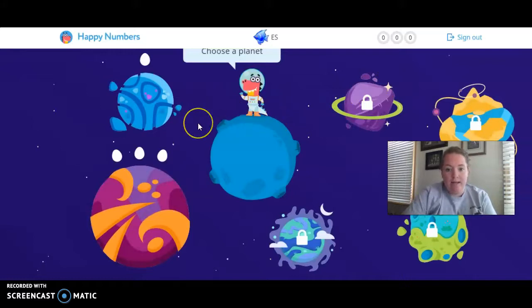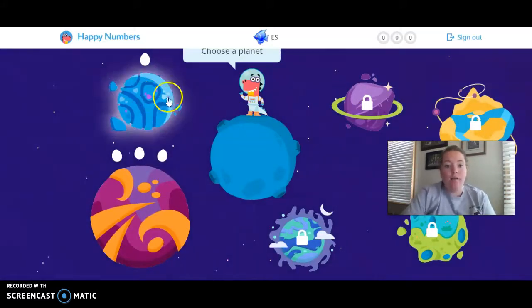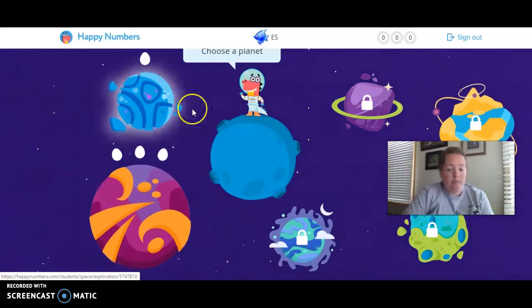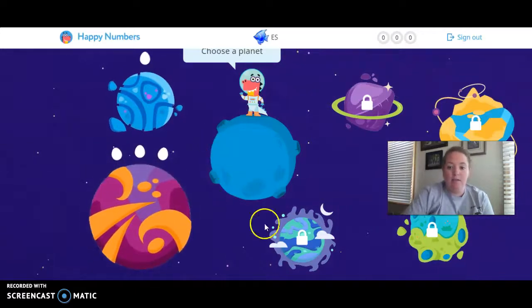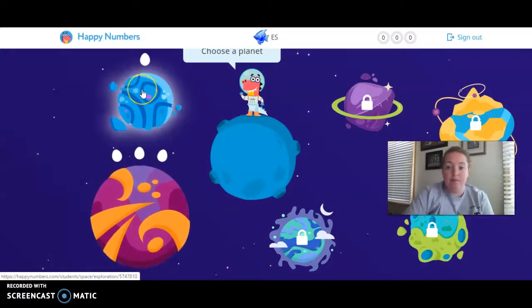And then it asks you to choose a planet. So, three-year-olds are all going to start right here. Actually, everyone, not just three-year-olds, all my friends are going to start over here at this one egg, and then you can go to this next one, and then it's going to unlock other planets for you, okay? So, we're going to start here.